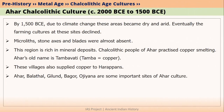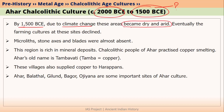Ahar Chalcolithic culture started around 2000 BCE and ended around 1500 BCE. Why did this culture end around 1500 BCE? Because during 1500 BCE there was a climate change, and due to this climate change these areas became even more dry and arid. Even before, this area had less rainfall, and after climate change it became even more arid, so farmers were unable to produce more crops.